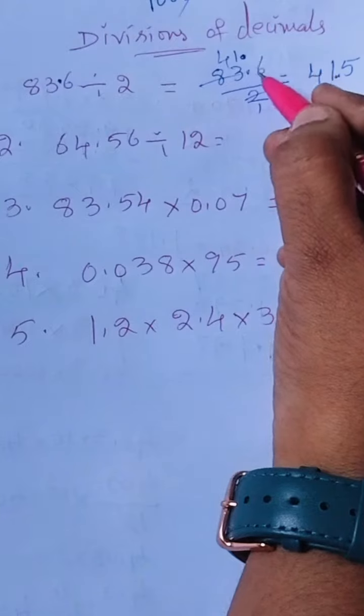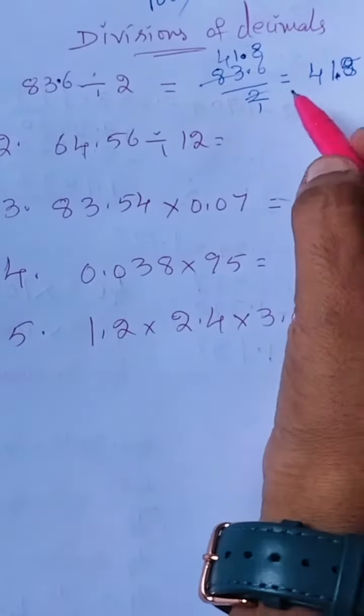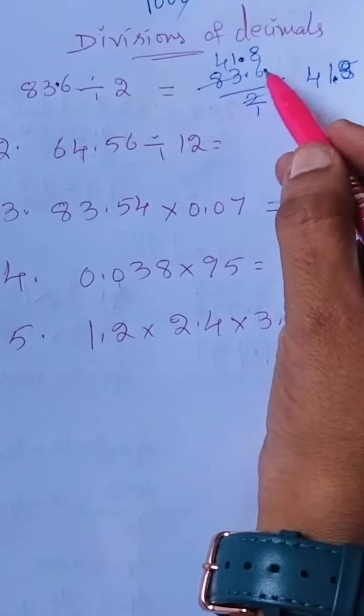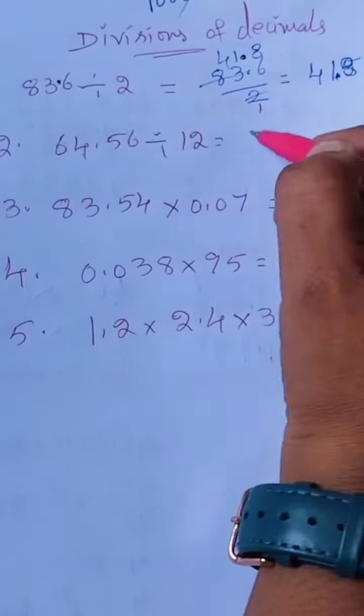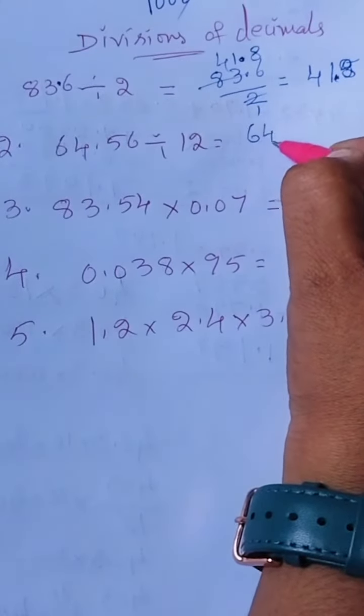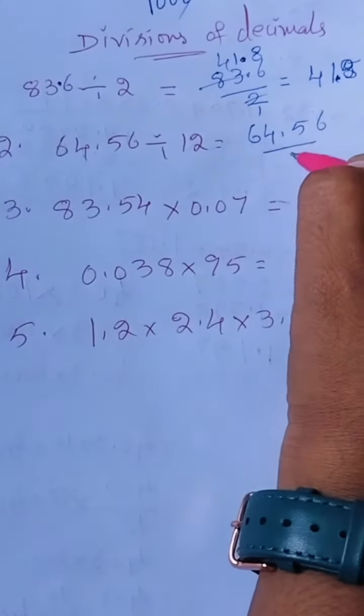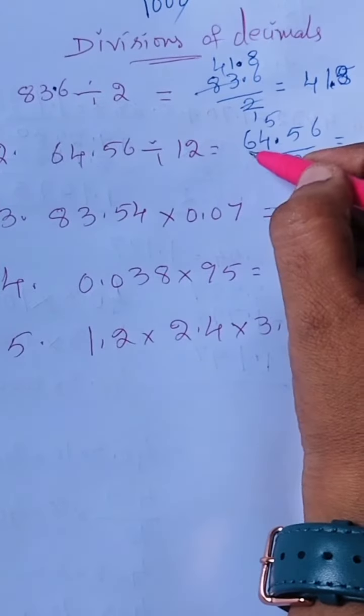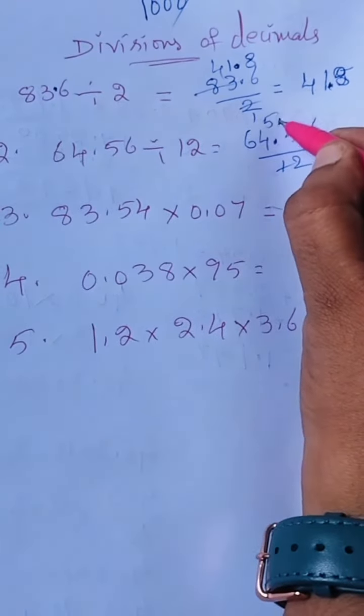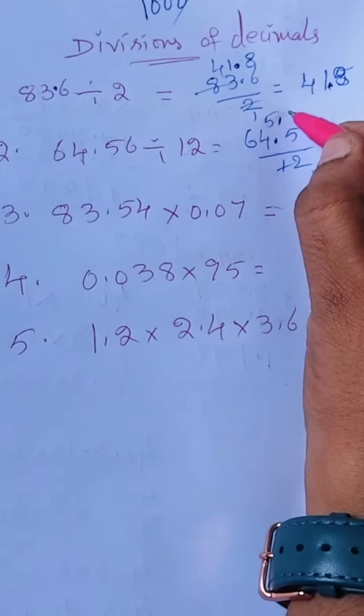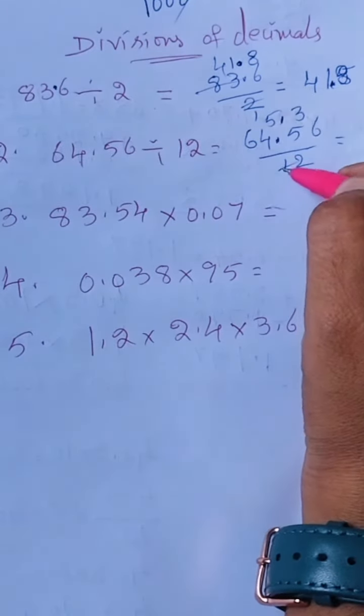Next one: 64.56 by 12. We keep the point. So 3s are 12, 3s are 36, and 8s are complete.